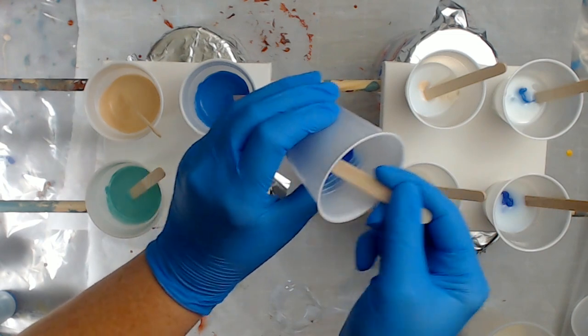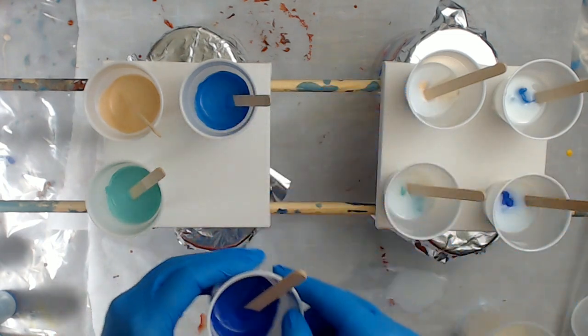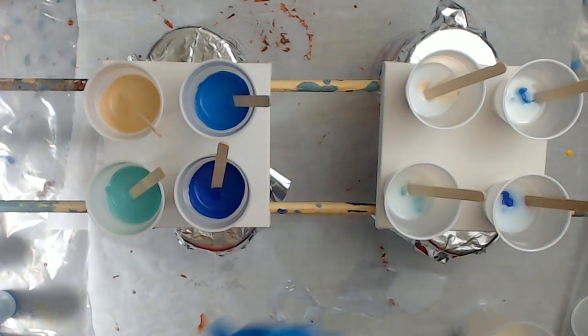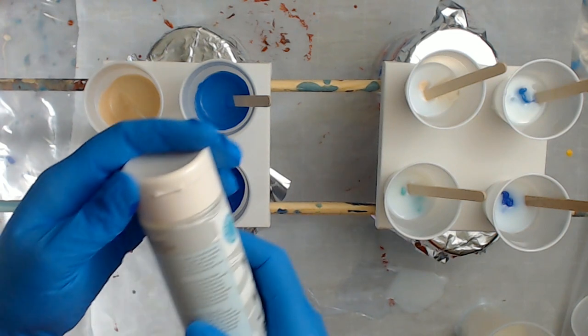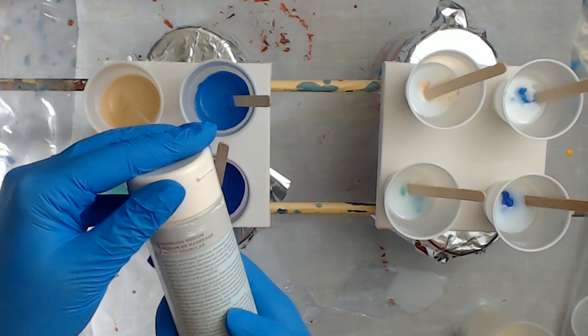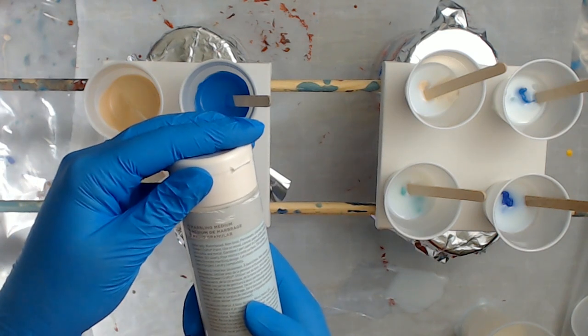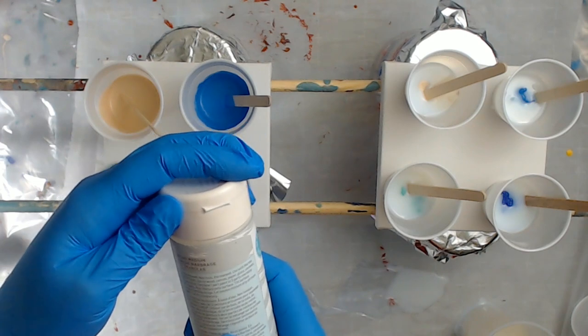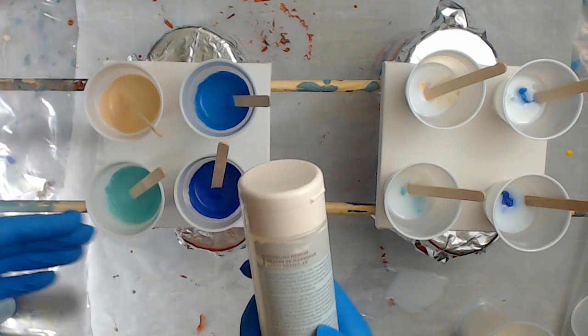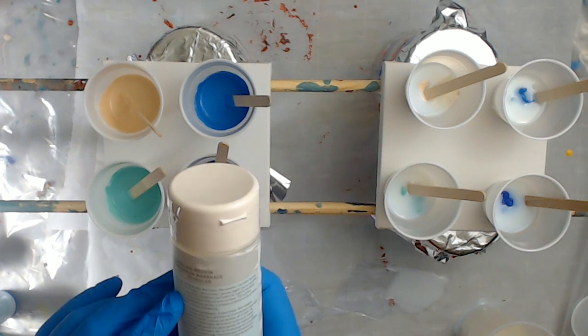I want to stir it until I don't have any white streaks. I'm fairly certain it dries clear. I didn't even read the back, but it says indoor only, water-based, non-toxic, permanent. One part paint to two parts marbling medium. I actually pretty much did that.